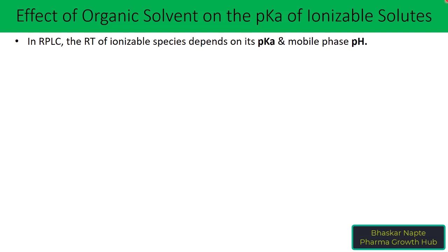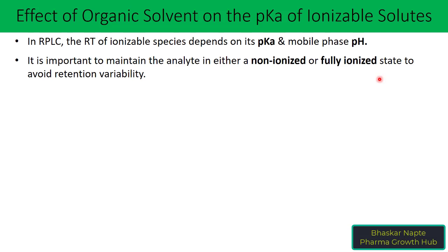So, what defines the ionization state of the compound? There are two important factors to consider: the first one is the pKa of the compound, and the second one is the pH of the mobile phase. It is important to maintain the analyte in either a non-ionized or fully ionized state to avoid retention variability.